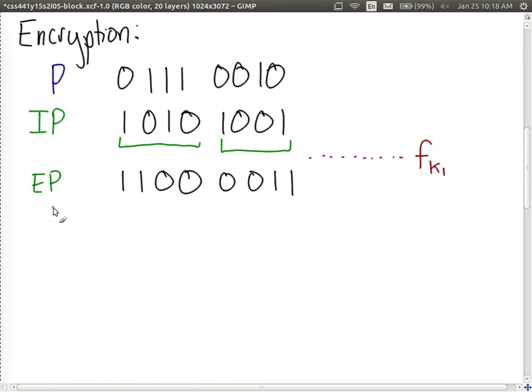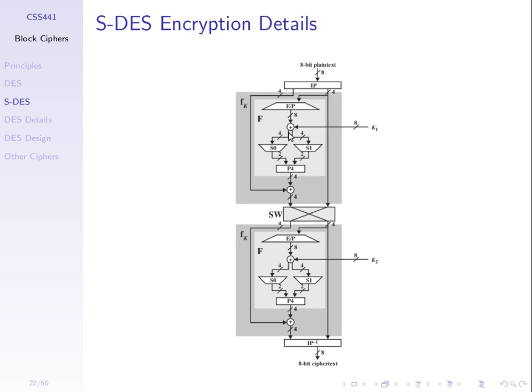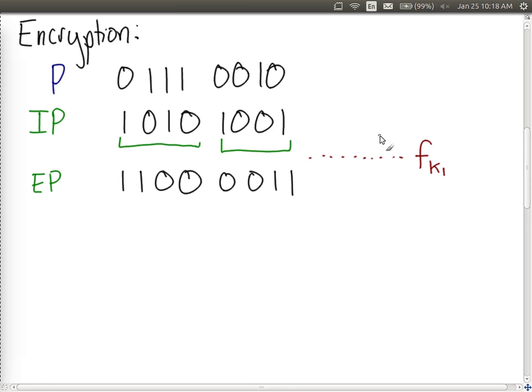We XOR the EP output with k1. Using k1 = 10100100: if bits are the same we get 0, if different we get 1. After XOR we get 8 bits of output. Key generation used only permutations; now XOR is the first substitution — the input had four 1s and four 0s but the output has five 1s and three 0s, confirming bit values changed, not just positions. We then split that result into two 4-bit values to feed into the S-boxes.